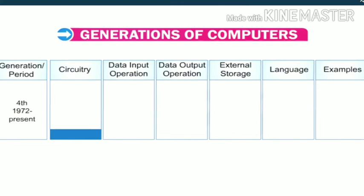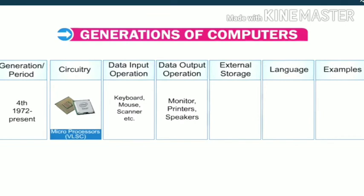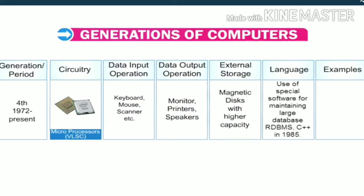Fourth generation computers, from 1972 to the present, have circuitry of microprocessors (VLSI). Data input is through keyboard, mouse, scanner, etc., and output is through monitor, printer and speakers. External storage is on magnetic disk with higher capacity. Languages include RDBMS and C++ (1985). Examples include IBM PC in 1980 and Apple Macintosh in 1984.